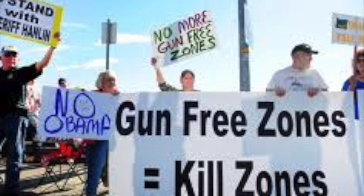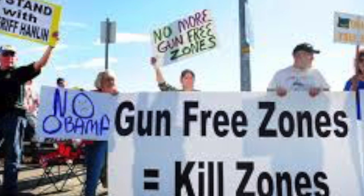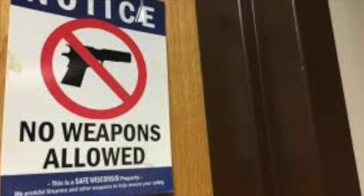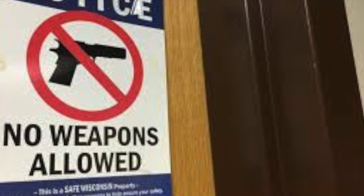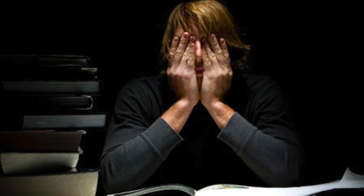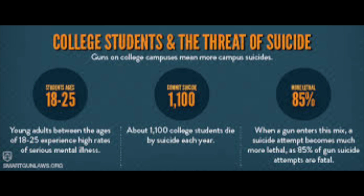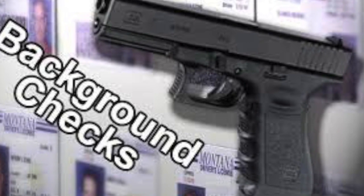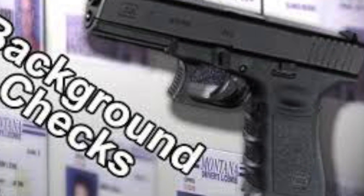Guns on campuses in the past have led to an escalation of violent crimes on campuses. With a stress-filled college environment, guns arguably cause depression and increase suicide rates. There have been several mass shootings at schools ending with the shooter killing him or herself. Because of this, many people want restrictions on the right to own guns, like background checks and permits.